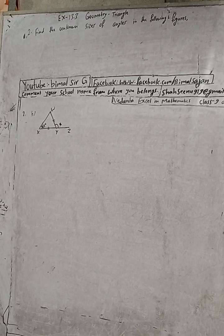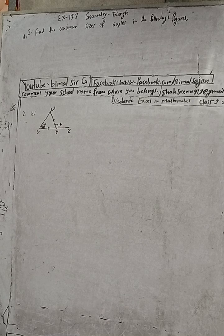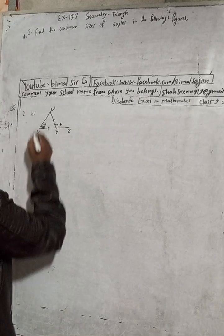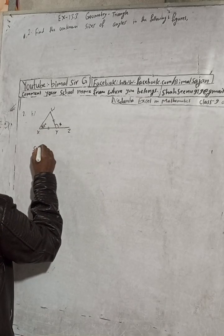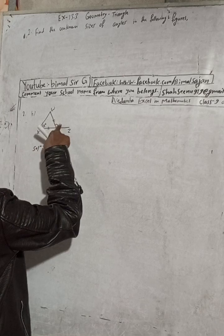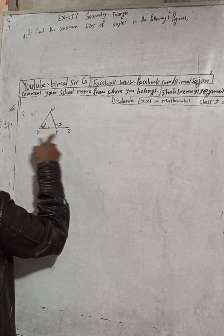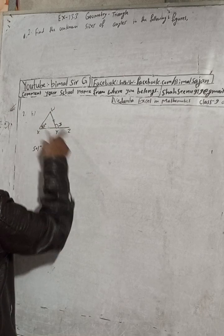This is question number 2b. The figure is here. Now for the solution, we have to find this x. This is triangle XYJ, this is a straight line XYJ.